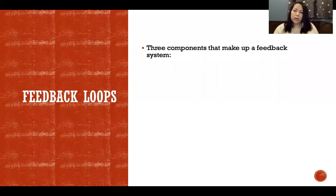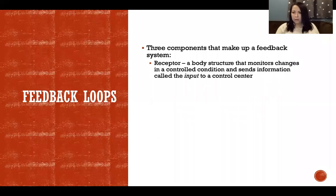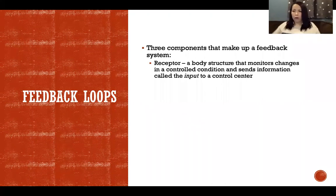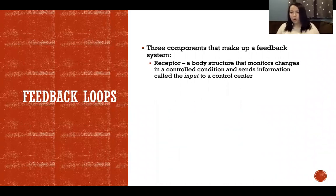There are three components that make up a feedback system. First, we have the receptors — sensory receptors throughout the body that detect information and changes in both the internal and external environment. They detect things like temperature in the air around us, or changes in blood sugar or blood oxygenation. They detect that information and send it to the control center, which is the brain.